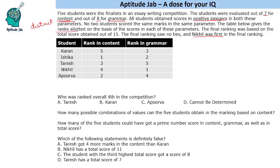Nikhil was first in the final ranking. Nikhil got first rank in grammar but fourth rank in content. The second person overall is Ishika, who has first rank in content and second rank in grammar. Since Nikhil had fourth rank in content and Ishika had first rank in content, Nikhil must have got a very high score in grammar compared to Ishika — it should not be just a one-mark difference.